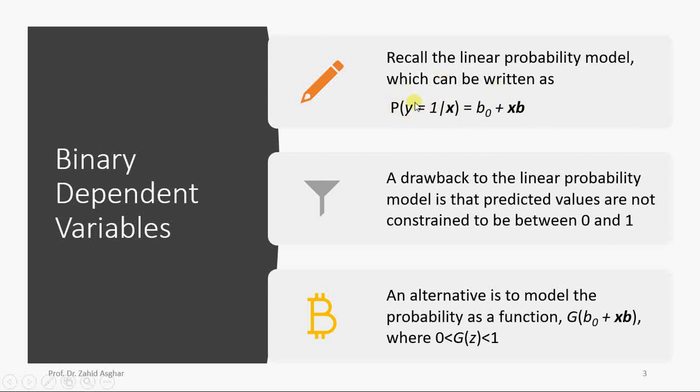One is that there is no upper limit or lower limit. It can exceed one or it can be lower than zero, which is not allowed in probability rule. It suffers from heteroscedasticity. Now we have to add this model to a link function so that the value of beta-0 plus X-beta doesn't exceed zero or one.